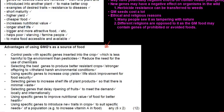Selecting the best genes produces better resistant crops. Using specific genes can increase crop yields or improve livestock for food security. Selecting genes to increase shelf life minimizes waste and delays ripening of fruits. Specific genes can also improve nutritional value and introduce new traits suited to the needs of a population — for example, increasing vitamin A content in food.